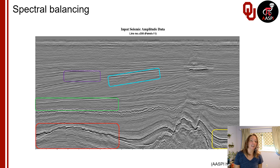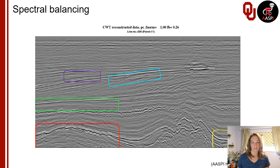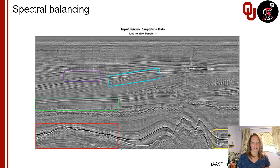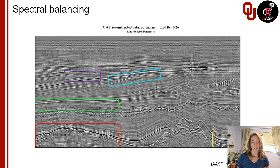Here's another example in a different area — I think this is offshore New Zealand. I've highlighted a few areas with colored boxes and I'll go back and forth a few times so you can see the effect of spectral balancing on the data, again increasing the high frequency content. You can see that it helps us image the stratigraphy a little bit better and some of the structural elements.